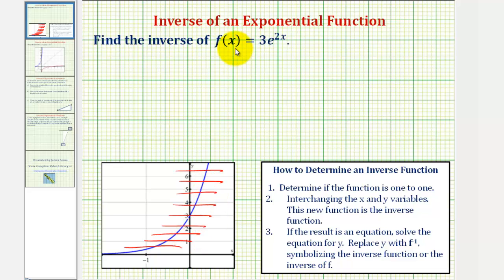Which means it does have an inverse function. So now that we know it has an inverse function, we can find it. Let's begin by replacing f of x with y. So we can write the given function as y equals 3 times e raised to the power of 2x.